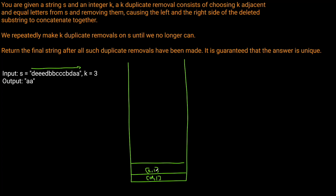Now we're at the second e, and we can see that e equals the top of the stack, so we increment the count from 1 to 2. Then we get to the third e — e still equals e — and we increment the count to 3. But since k equals three, we're not allowed to have three in a row, so we need to remove this e from our stack. Those are three e's in a row, so we get rid of it.